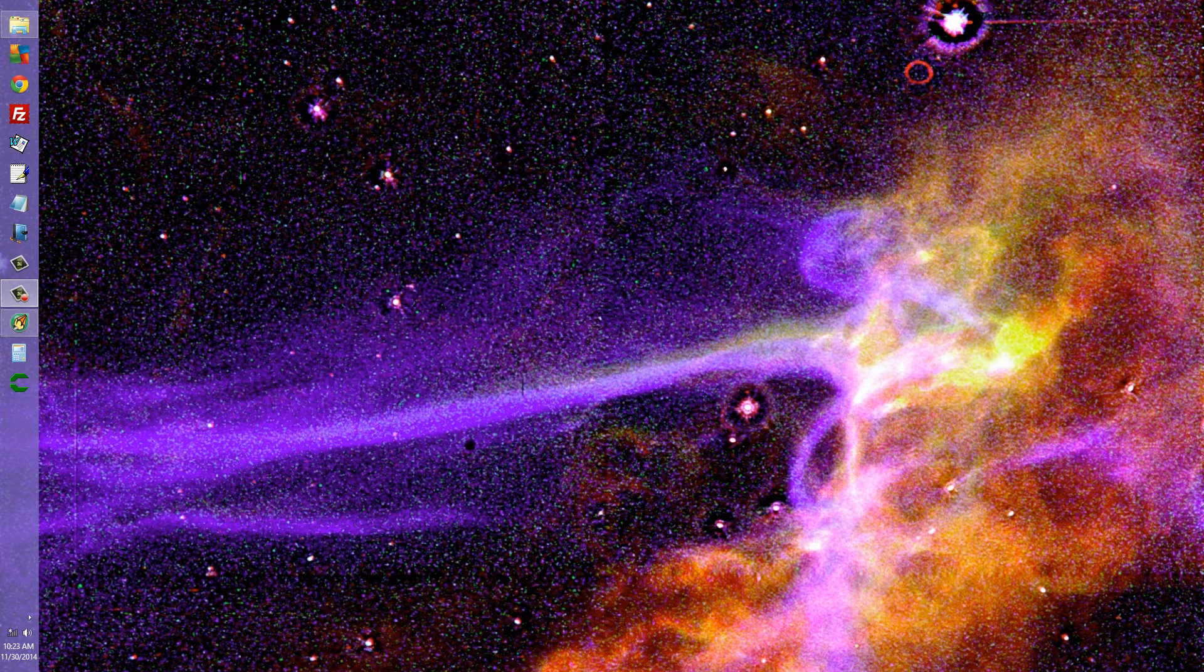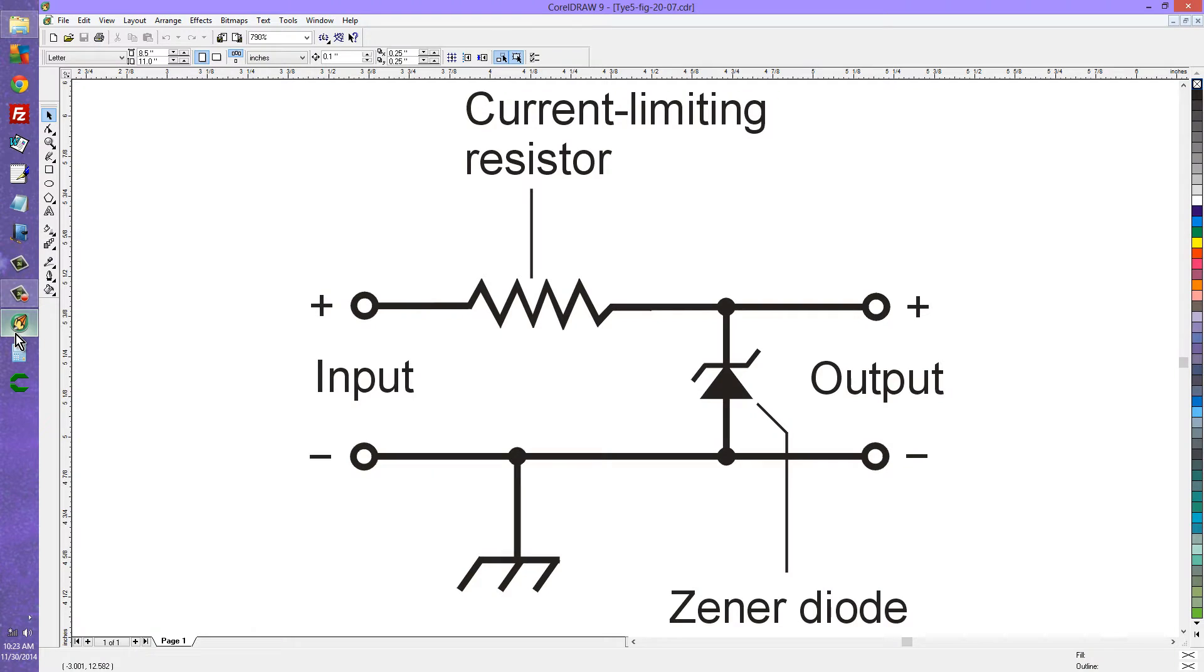Stan Jabalisco here to outline for you another application for Zener diodes and that is the regulation of voltage in a very low current circuit. Here is the basic schematic diagram from my book Teach Yourself Electricity and Electronics.